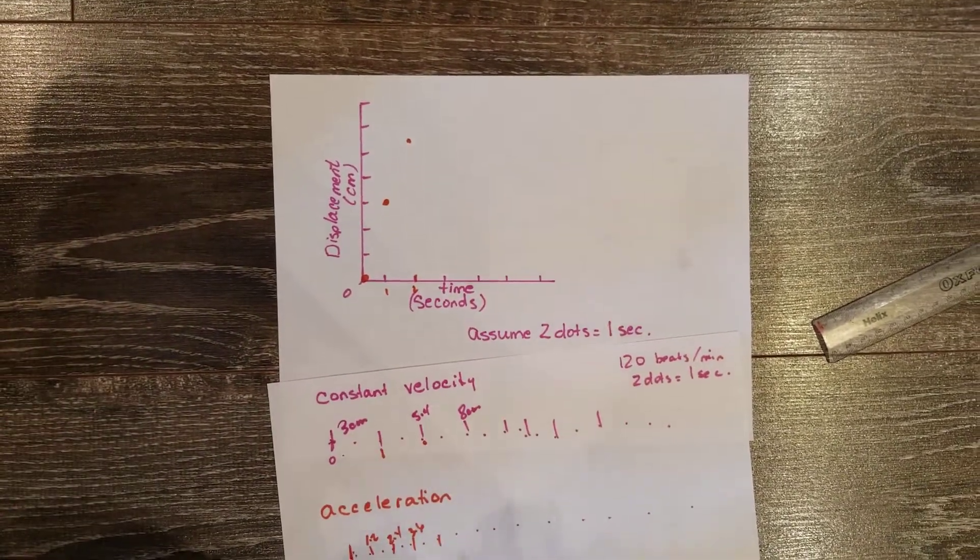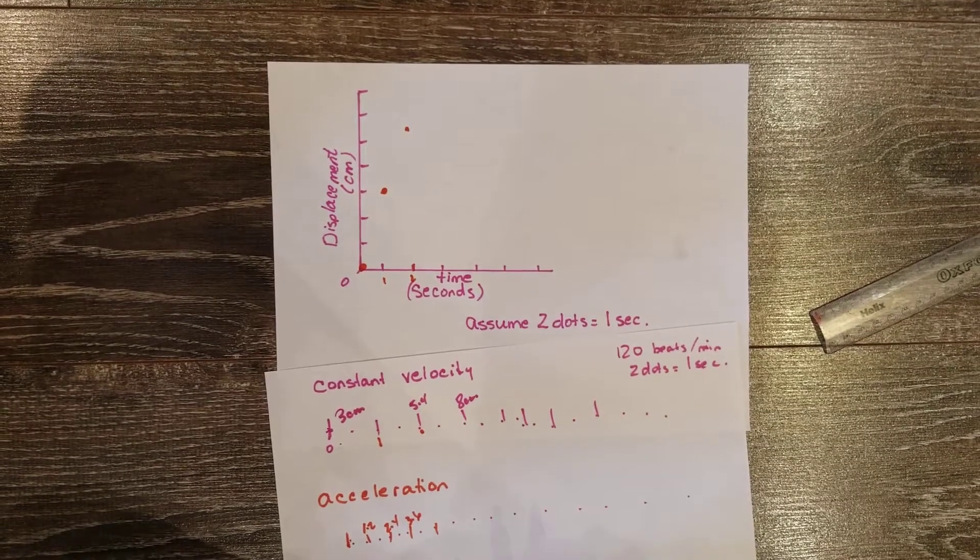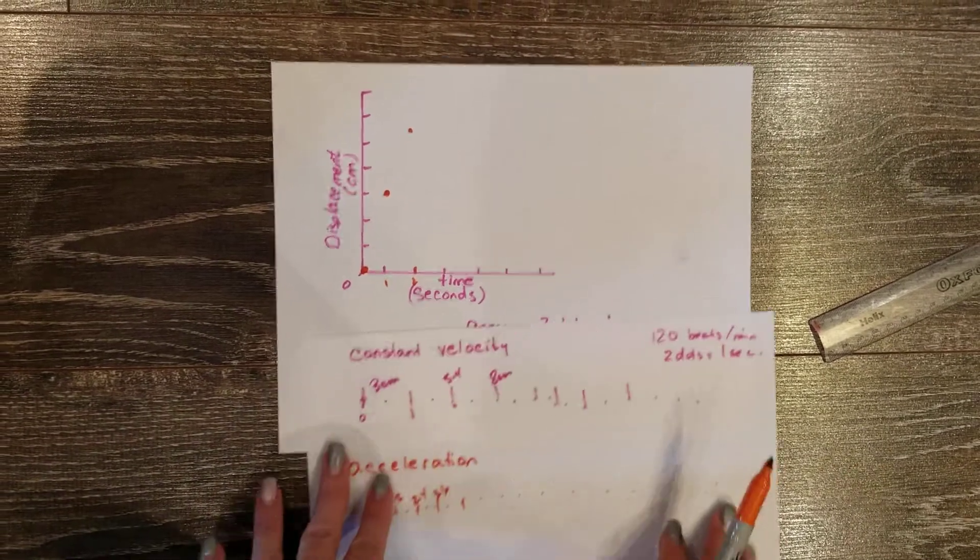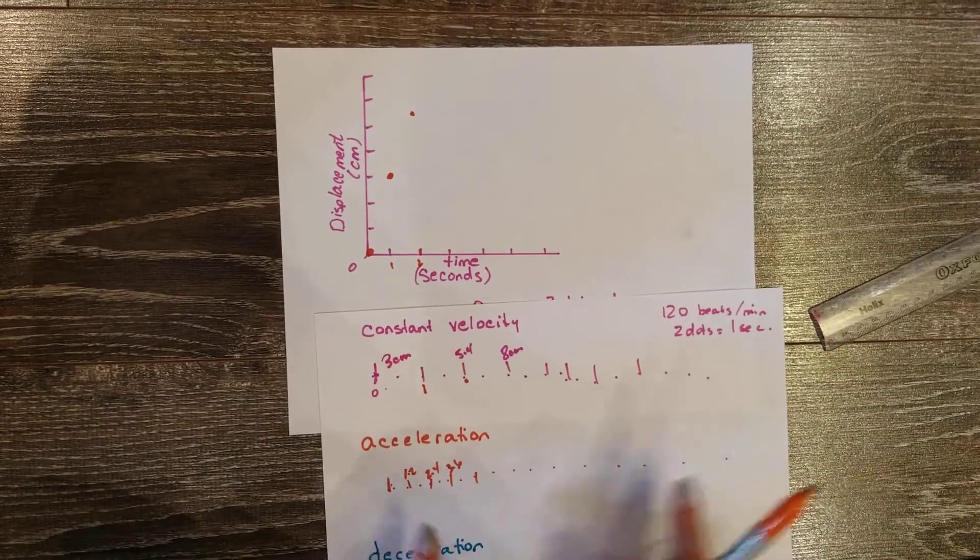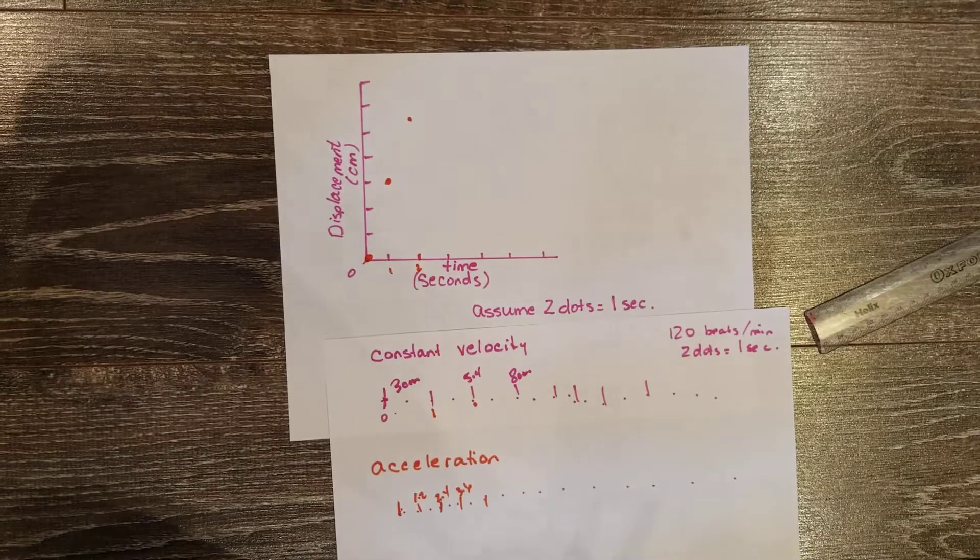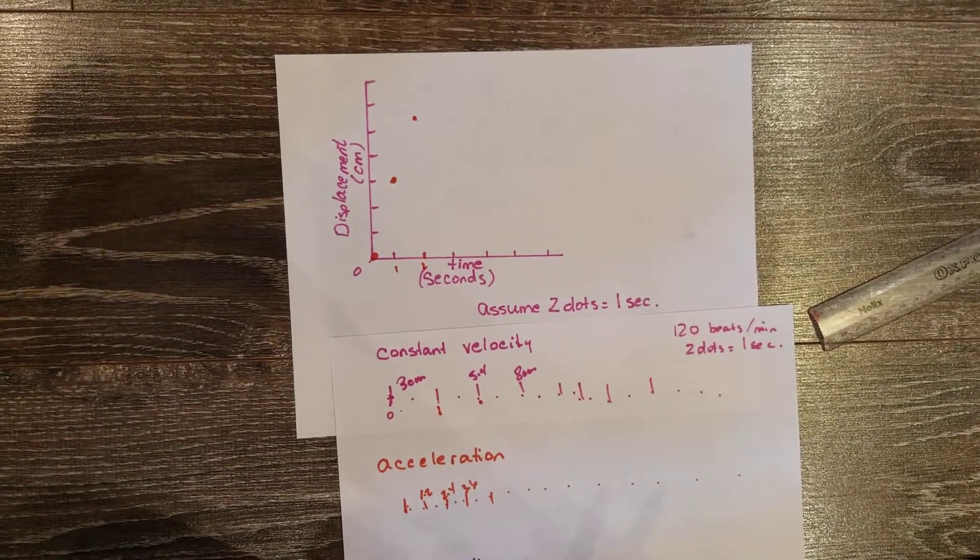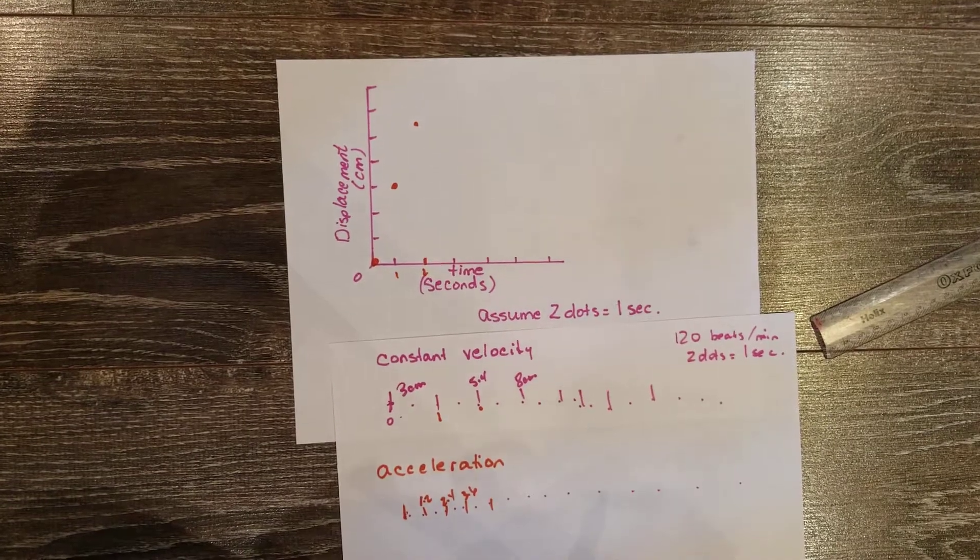Once you're done, go on over to the assignments tab. I have a short series of multiple choice questions that asks you questions about what your ticker tape looks like, and also what your graph for each one looks like. It's a short, simple little assignment and it is for marks. Message me if you need any help at all.